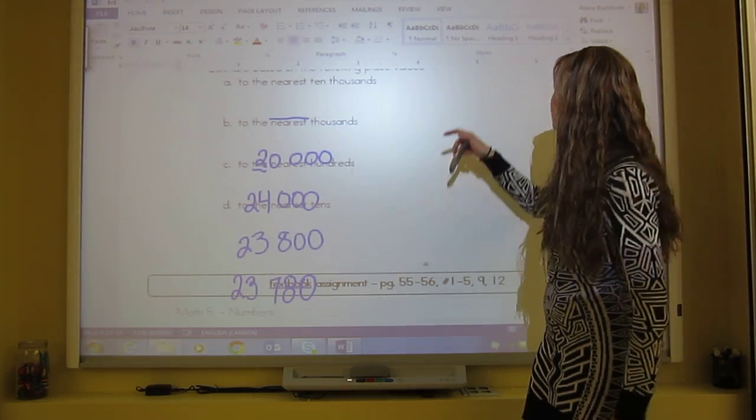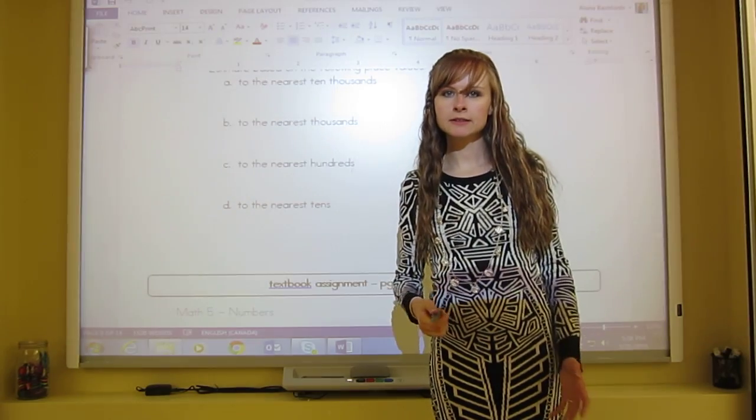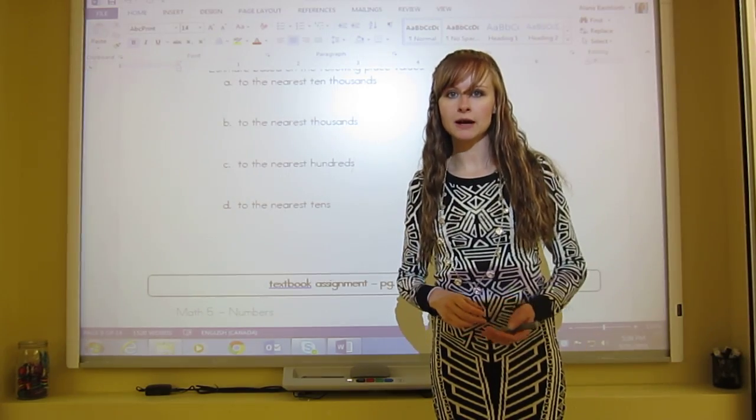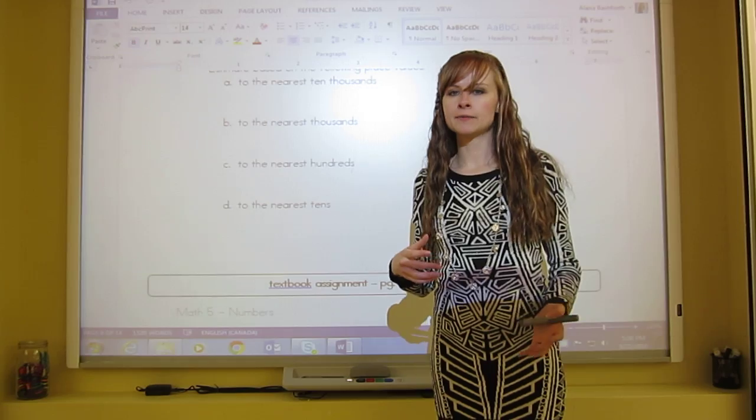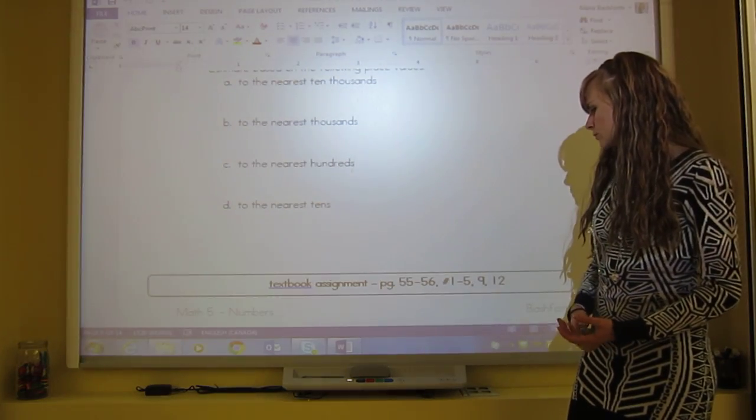Okay, and that's the entirety of the lesson. You're basically rounding. Sometimes you're adding things, but you're basically making sure that you can round. So the textbook assignment is page 55 to 56, numbers 1 to 5, 9 and 12.